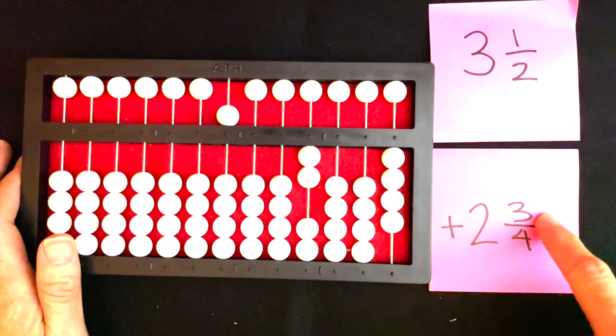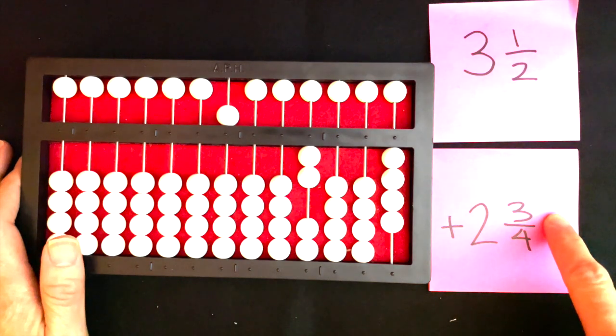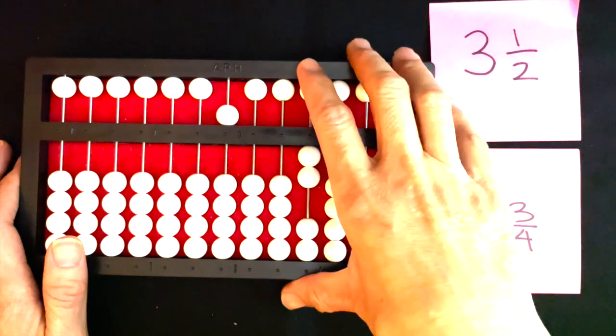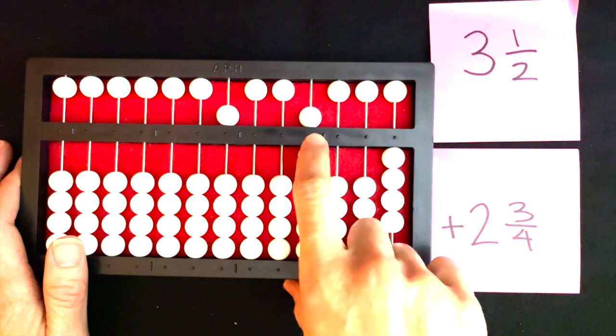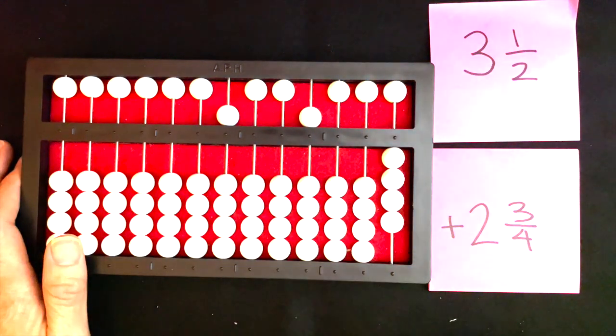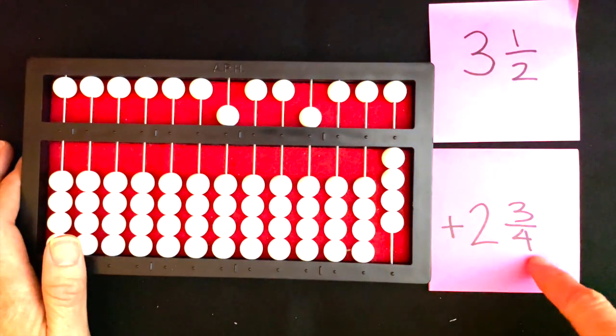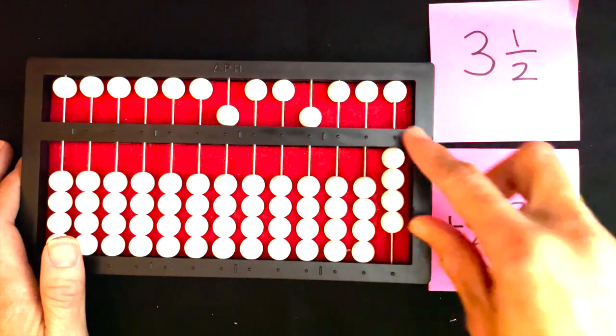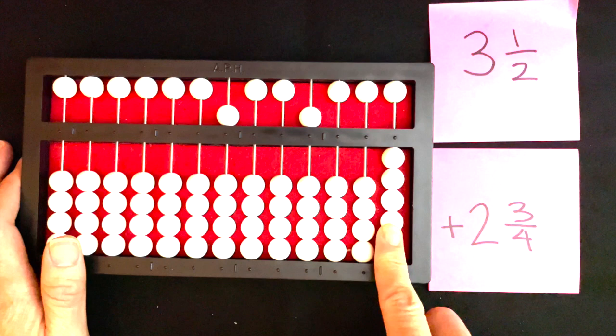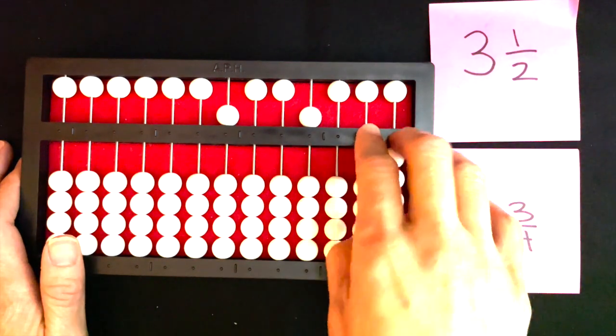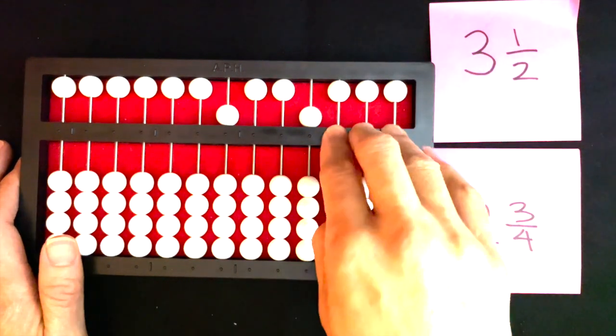I'm going to move to my numerator. I want to add three. I can't do that directly, so I'm just going to add five and clear two. My denominator doesn't change. I already have my least common denominator here, which is four. Now I'm going to read my answer and it's going to be a little funky, so we're going to have to change it up a little.